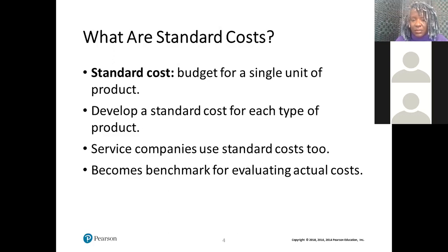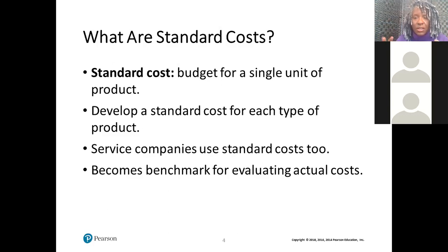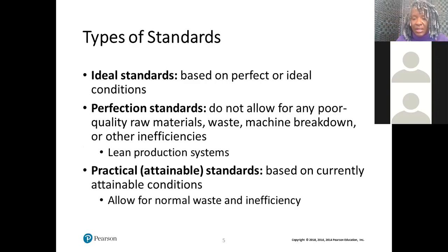Standard cost is a budget for a single unit — not actual. When determining your variance you take actual and subtract it from your standard cost, which is your budget. We want practical ways to evaluate our budget, considering waste and inefficiencies. For Apple, right now we're dealing with a pandemic and things are not ideal — we can't produce, we can't ship, we can't receive products manufactured in China.